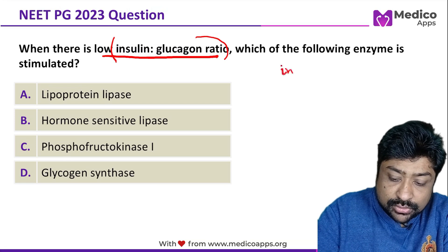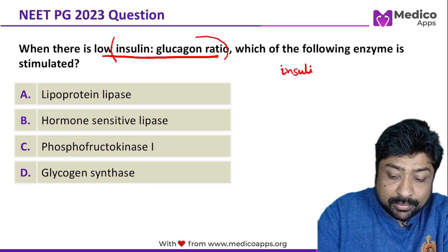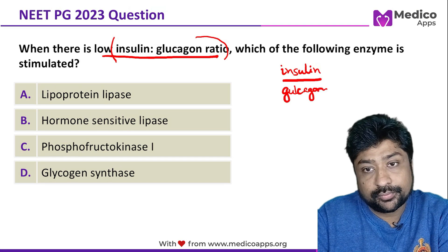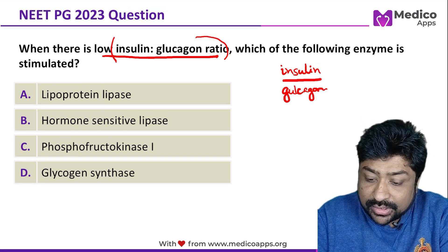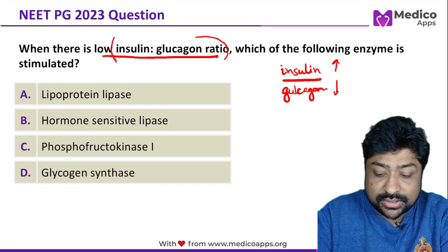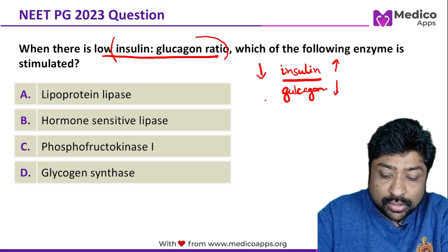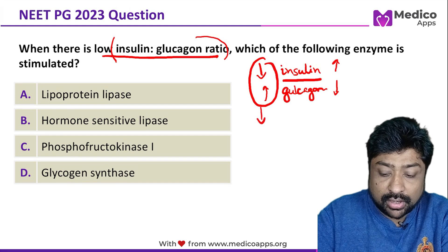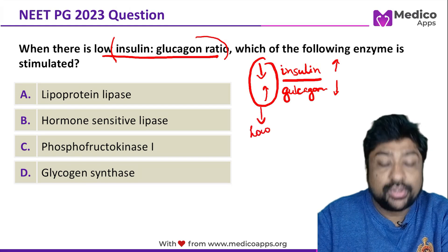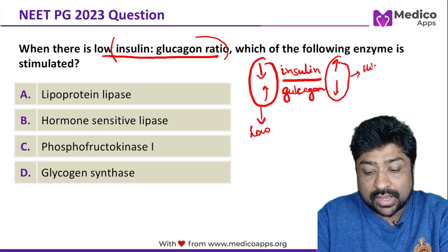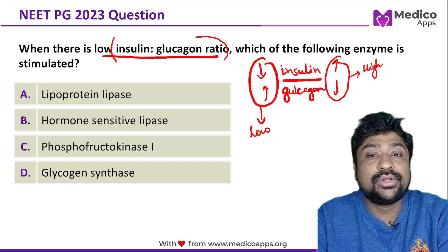We know that insulin is an anabolic hormone and glucagon is a catabolic hormone. When insulin increases, glucagon goes down — that is one situation. When insulin decreases, glucagon goes up, leading to a low insulin-glucagon ratio. The reverse leads to a high insulin-glucagon ratio.